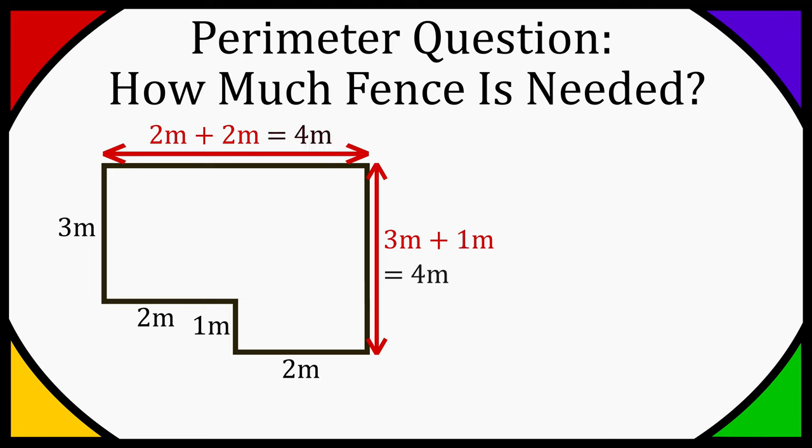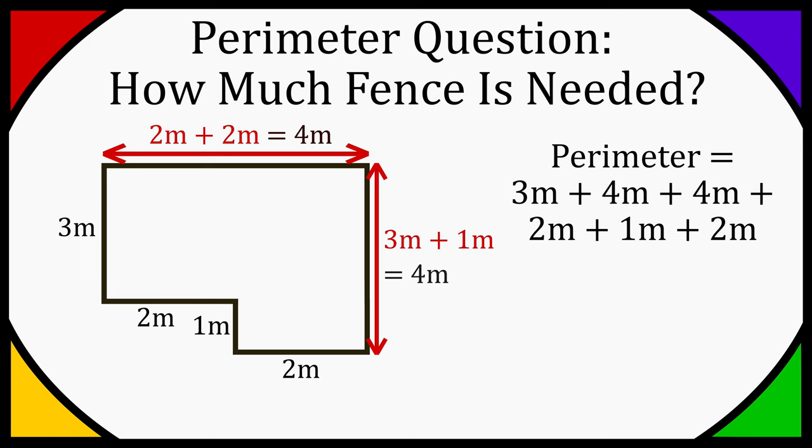So now we have all the lengths labeled. To find the perimeter all we have to do is add all these values up. Now I'm going to go from the three meter length and go clockwise. So we have three meters plus four meters plus four meters plus two meters plus one meter plus two meters. Then if you just add them all up that's going to add up to sixteen meters.